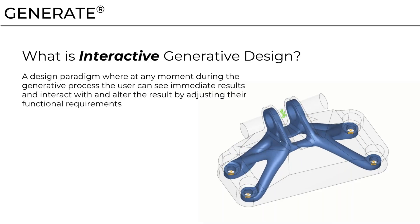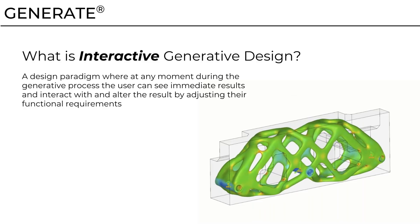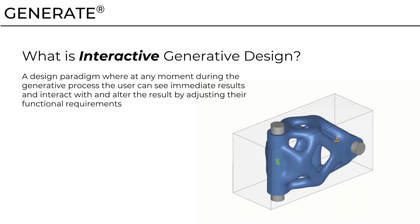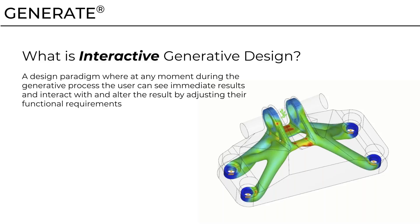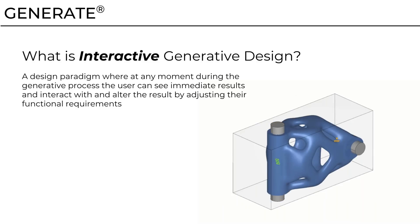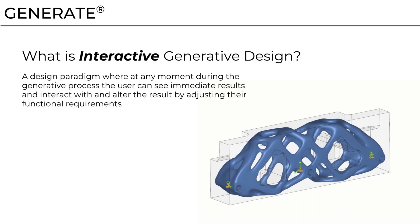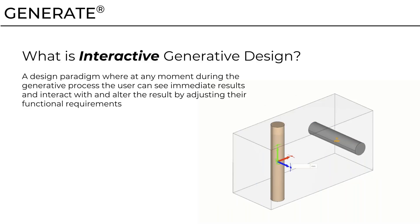What's different about this version of Generate is that it's interactive. Interactive generative design means at any time during the process, the user can see immediate results and interact with and alter that result by adjusting the functional requirements. There's a GIF playing that shows a sneak preview — the shape evolves in front of you, and while it's being created you can adjust parameters. So if you've supplied a load and you're getting a strange displacement that's not what you expected, you can go in and change it. Interactive generative design means you are interacting with those results and making changes in near real time.